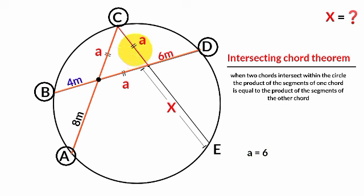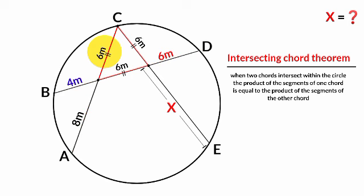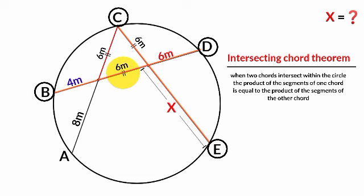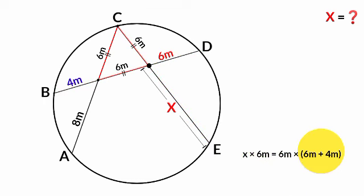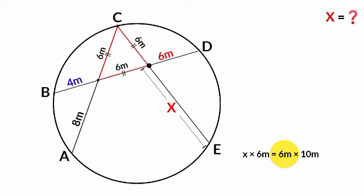Now applying the Intersecting Chords Theorem to chord CE and chord BD — since they intersect at this point — the product of X and six meters must equal the product of six meters and the sum of six meters and four meters. So: X × 6 = 6 × (6 + 4) = 6 × 10. The six meters cancels, giving X = 10 meters.